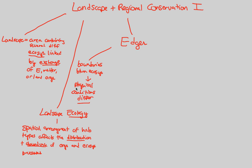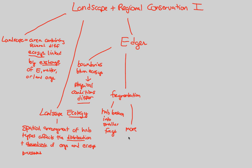Within an edge scenario, we observe fragmentation — which we've seen before, but now in the context of a landscape and spatial arrangement. Fragmentation is when a habitat is broken into smaller fragments. When habitats are broken down into smaller and smaller components, you get more and more edges.